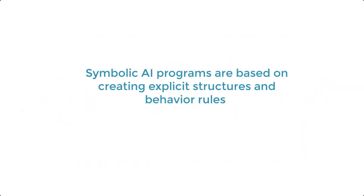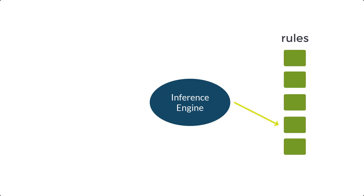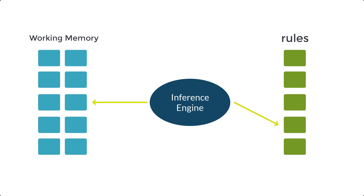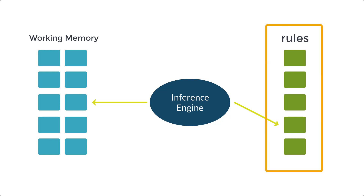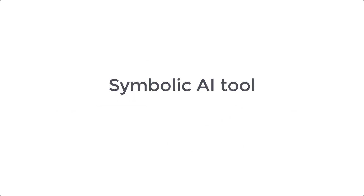Symbolic AI programs are based on creating explicit structures and behavior rules using if-then statements. In a rule-based system, the inference engine iterates through a given set of rules and tries to find a match in its working memory. The working memory consists of all the facts the system currently knows about the situation. Symbolic AI is very convenient for settings where the rules are very clear. In fact, rule-based systems still account for most computer programs today. Today, a common example of a symbolic AI tool is object-oriented programming.